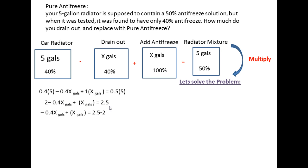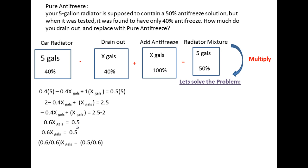Now we get the x's on one side and constants on the other. Move the 2 across the equals sign and change its sign to minus: negative 0.4x plus x equals 2.5 minus 2. That gives us 0.6x equals 0.5, so x equals 5/6 gallons to drain and add.